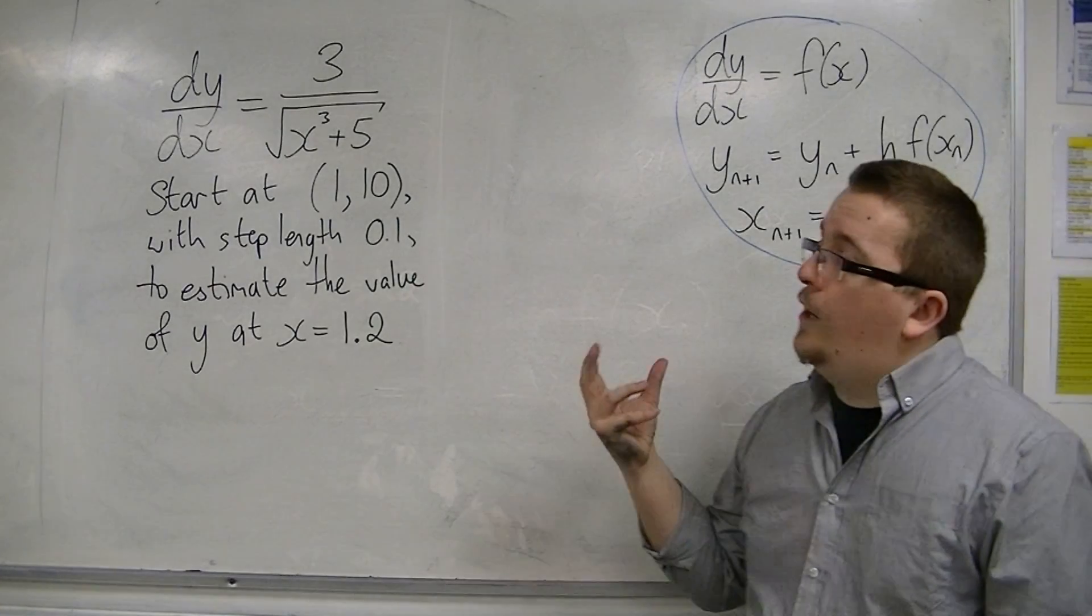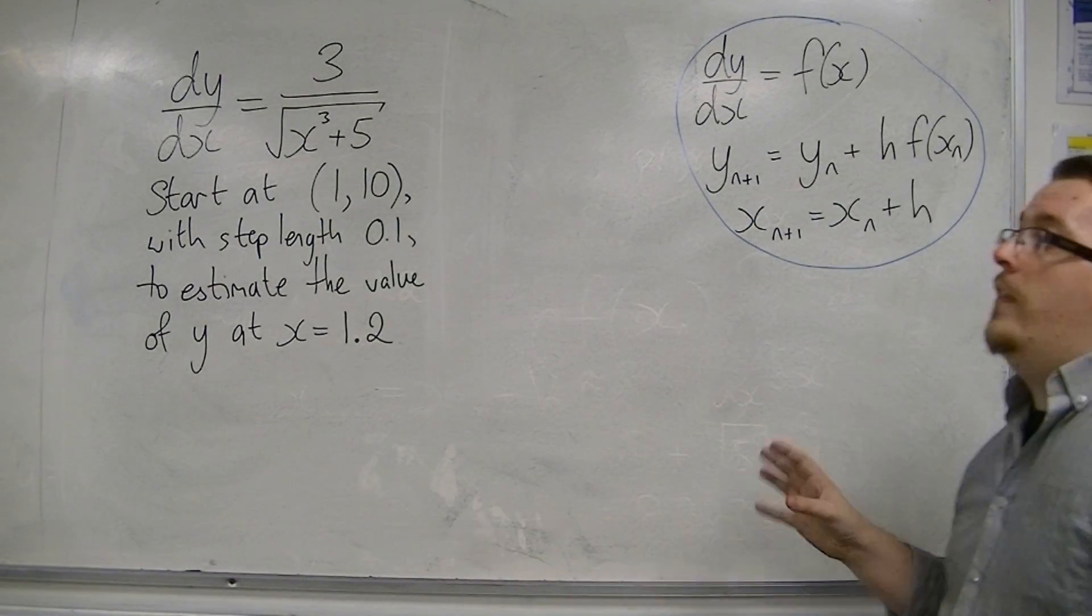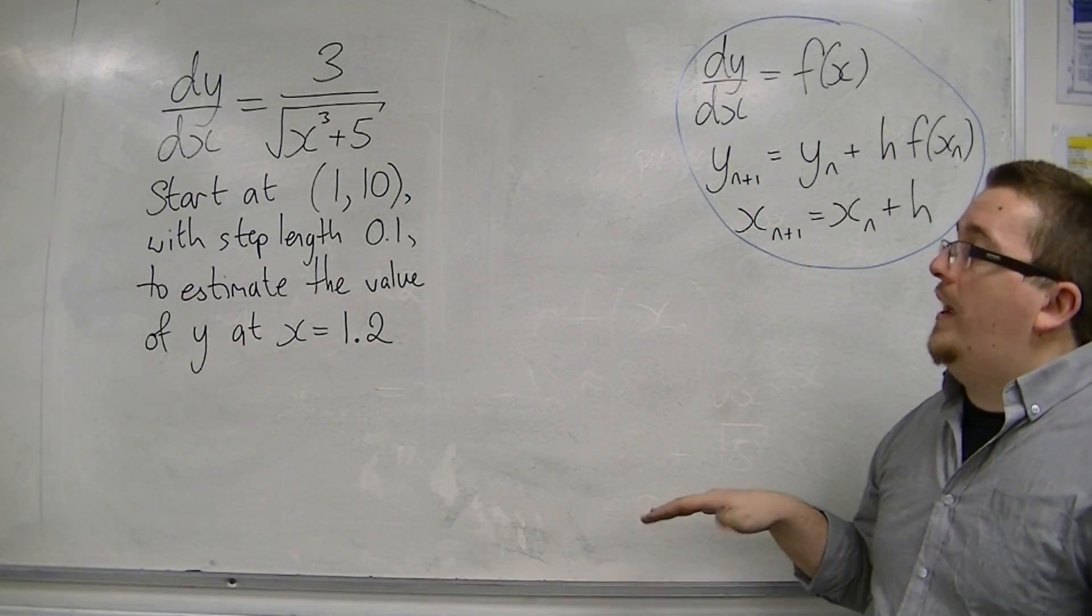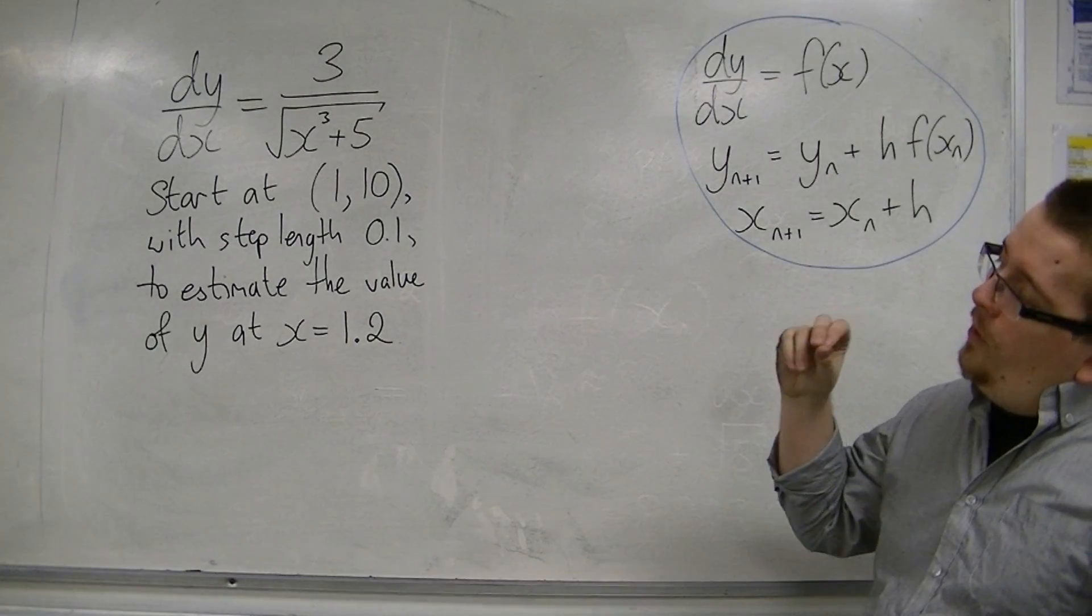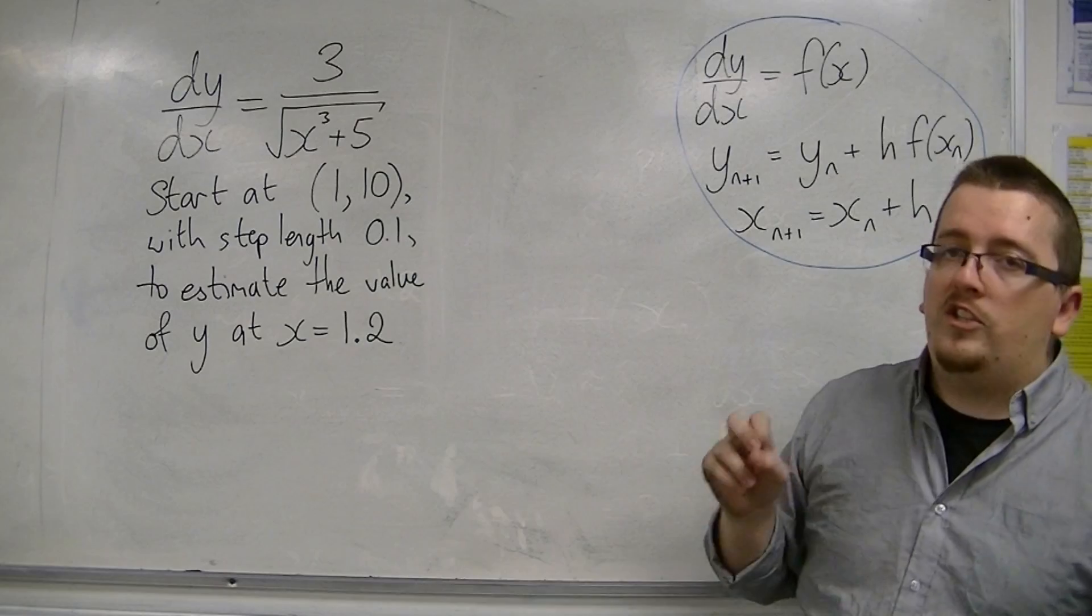dy/dx is equal to 3 over the square root of x³ plus 5. We're going to start at the coordinates (1, 10), so the curve goes through the point (1, 10). And with step-length of 0.1 we want to estimate the value of y at x equals 1.2.